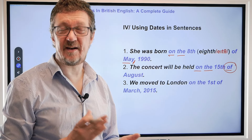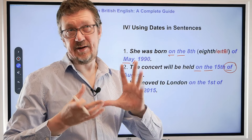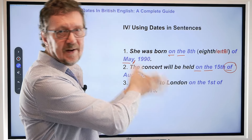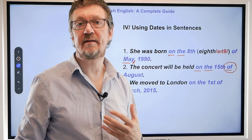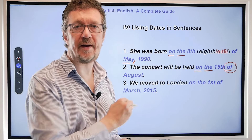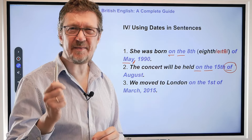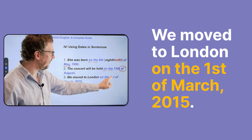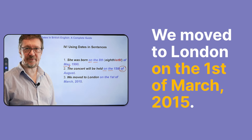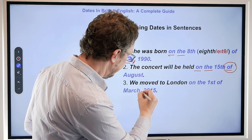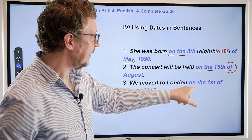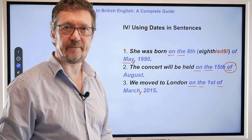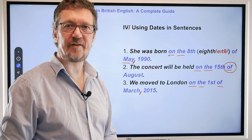The format of how you're writing dates is something that people always watch, so make sure you get things right. 'We move to London on the 1st of March, 2015.' Same rule — you have this little comma here, and again 'on the' and 'of' — all included, very important. Write like this and you will look very professional.